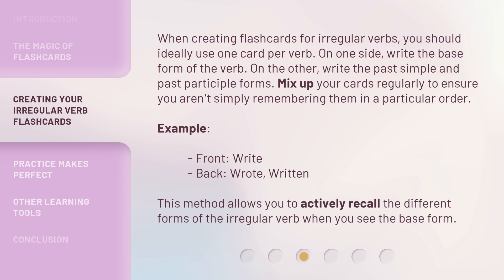For example, the front of the card might read 'write', and the back would show 'wrote, written'. This method allows you to actively recall the different forms of the irregular verb when you see the base form.